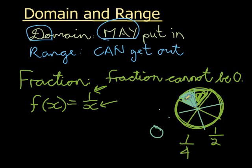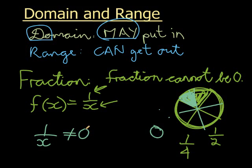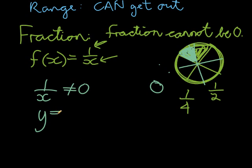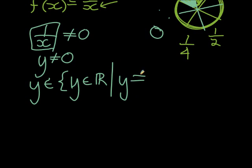You will never have a fraction equal to zero unless what I divided can be equal to zero. I divided a cake, not nothing. So a fraction, no matter what the denominator is — even a negative number — that fraction can never be zero. One over x cannot be zero; it's impossible. No matter what I use for x, I can never get zero. x may not be zero, and 1/x cannot equal zero. That means y will never equal zero. In set notation: y is an element of any real number, given that y is not equal to zero.